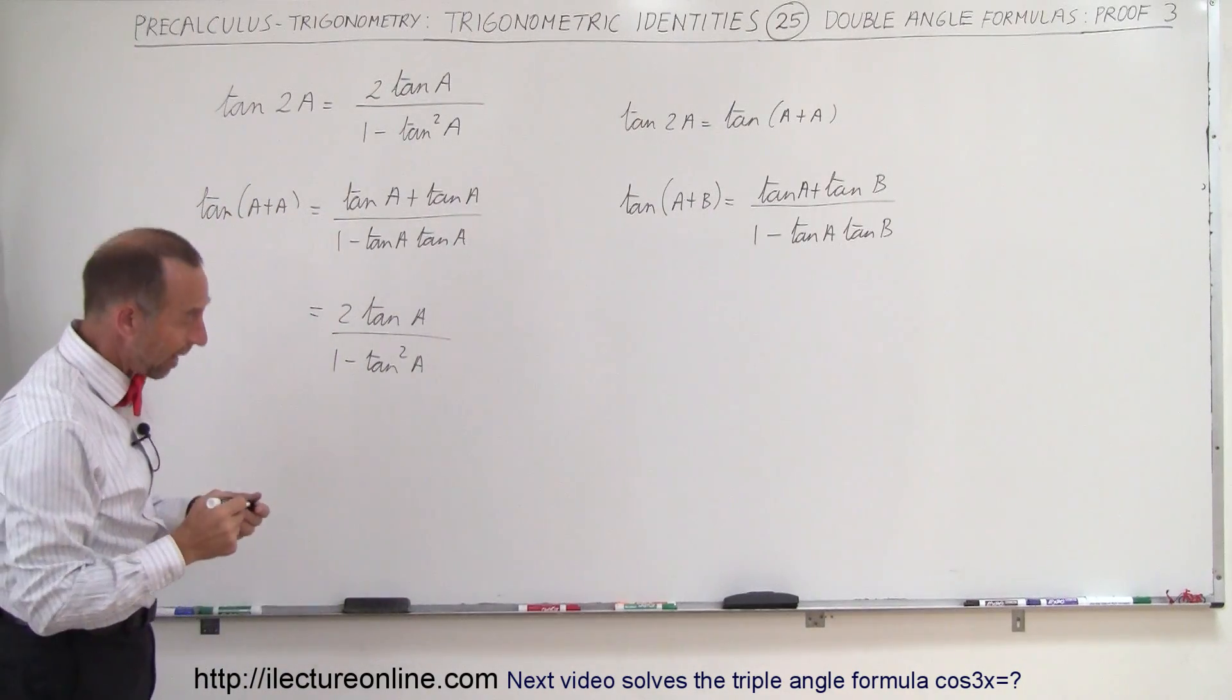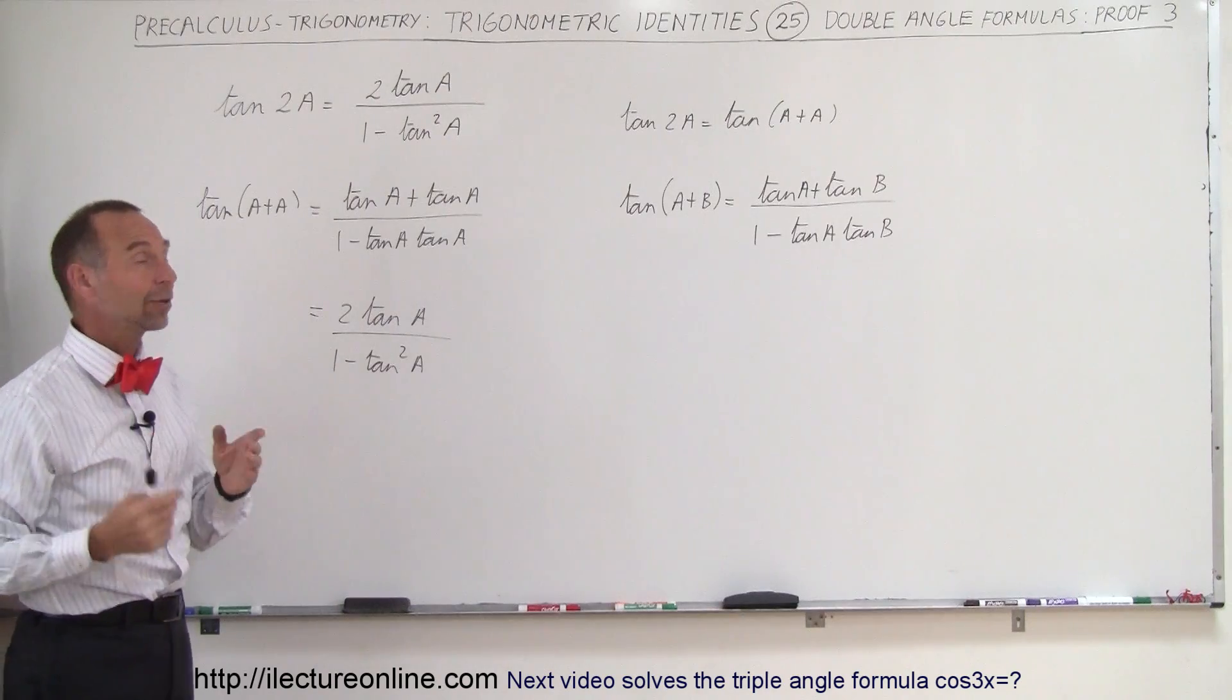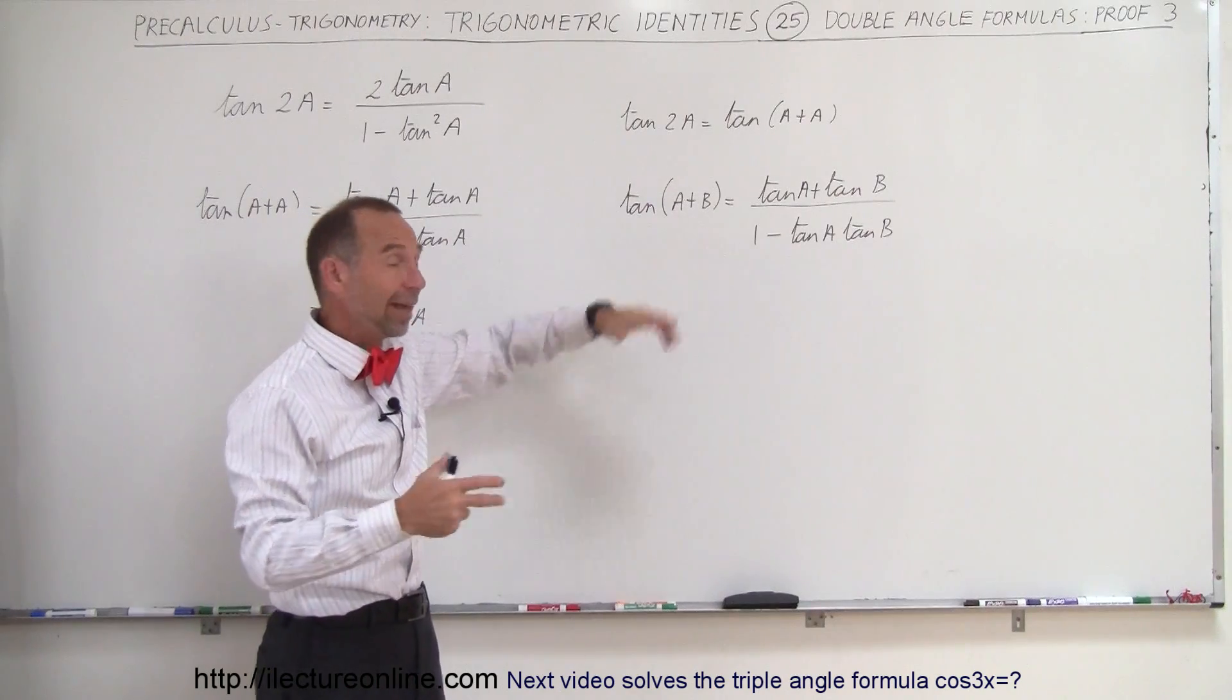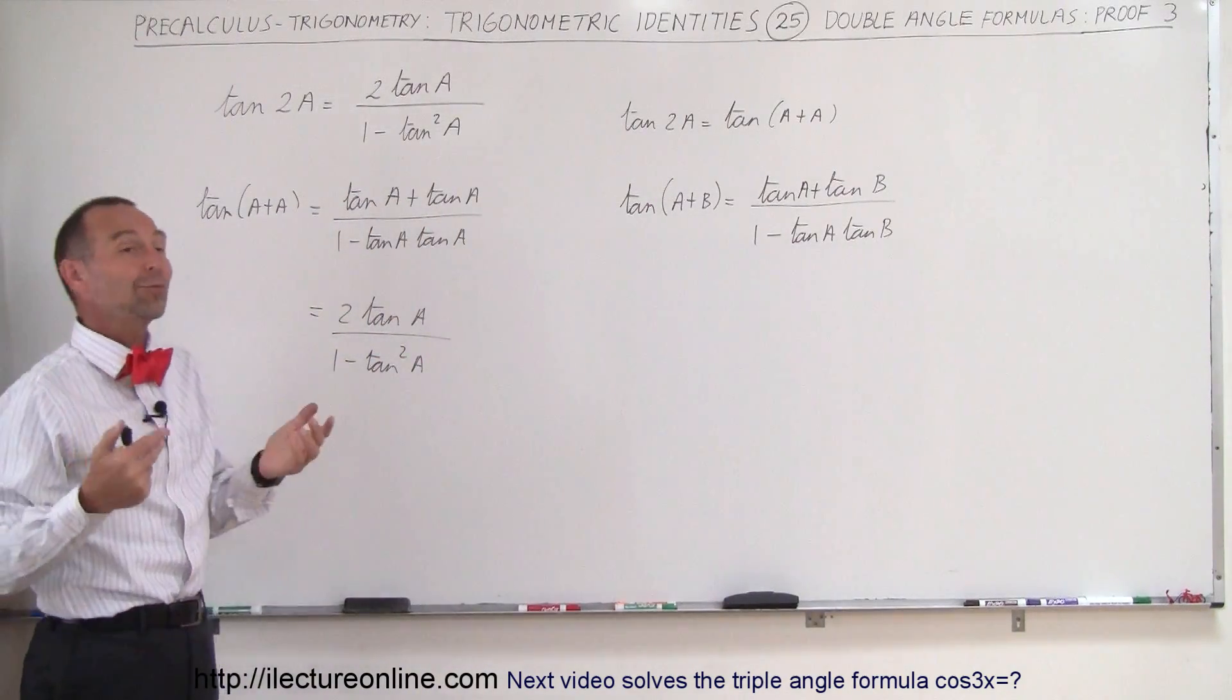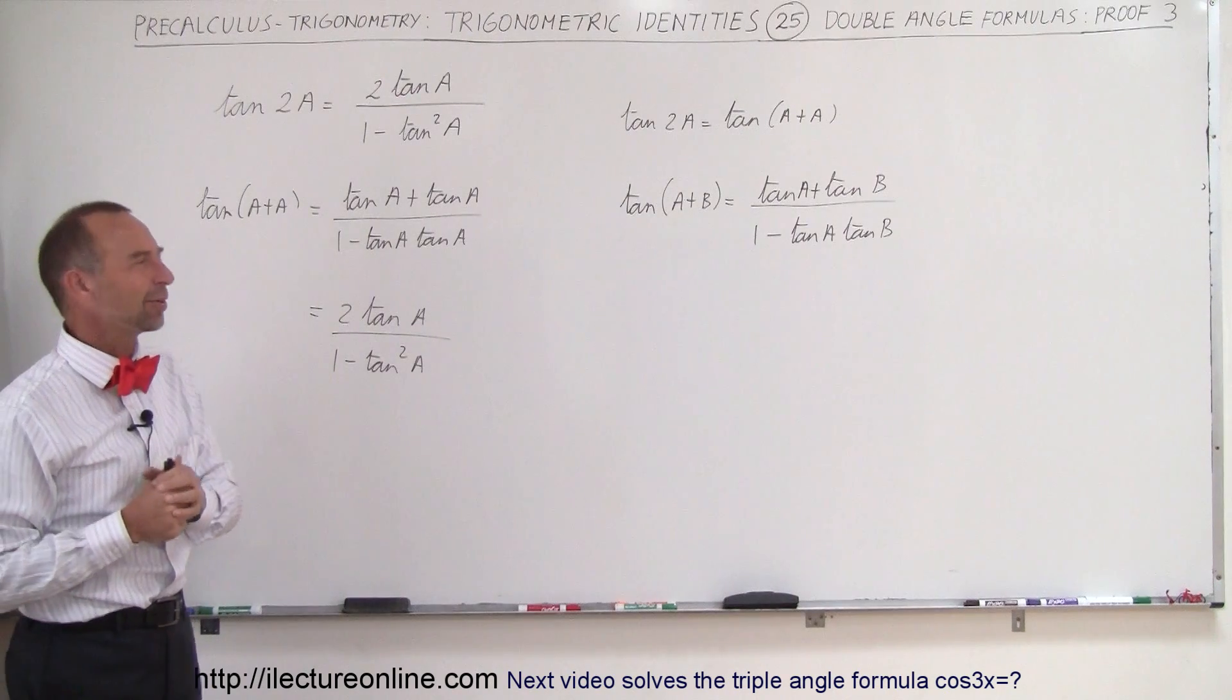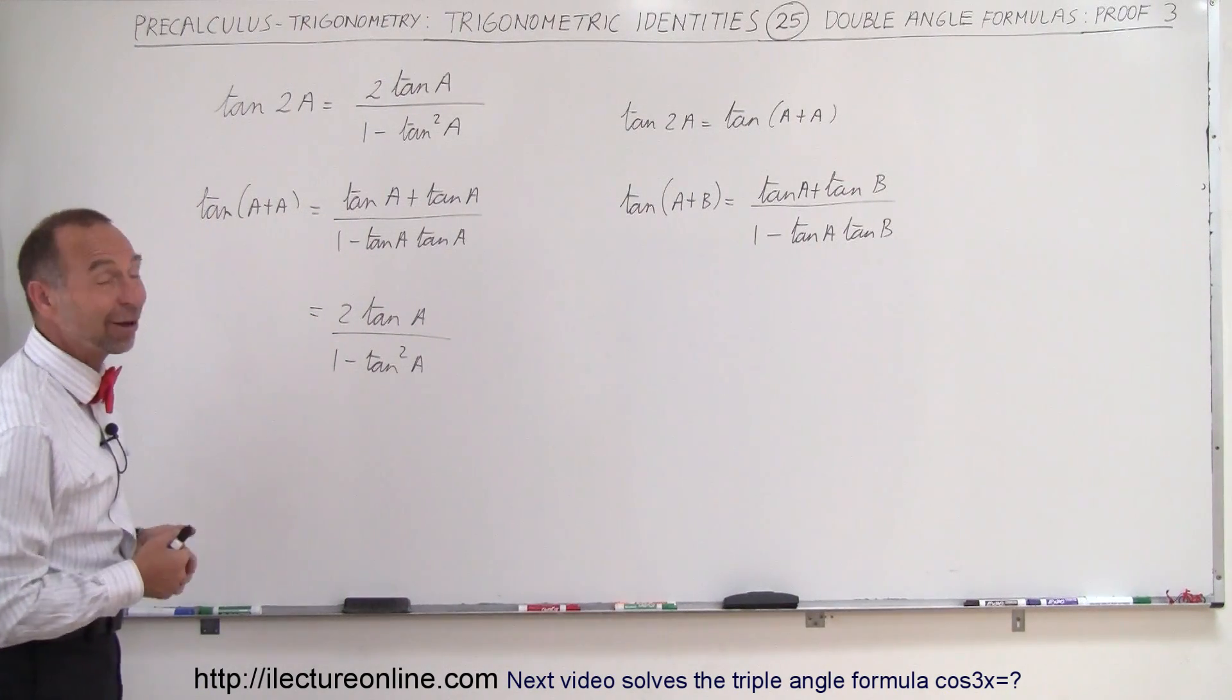So again, I find it a lot easier, instead of memorizing these equations, simply going back to memorizing the summation formulas for sine, cosine, and tangent, and then quickly derive the double angle formulas. But if you're one of those people that can easily remember 100 different formulas, go for it. Memorize them all. For me, it's a little bit more difficult, so I tend to like to derive them instead. And that's how we do that.